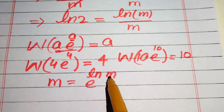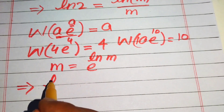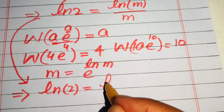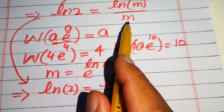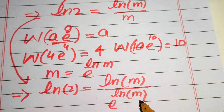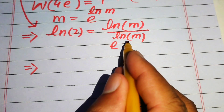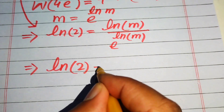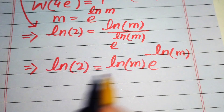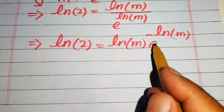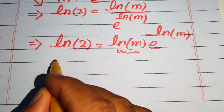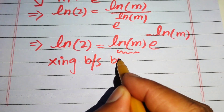We replace m with e to the power of log m, so the right-hand side log of m divided by m becomes log of m divided by e to the power of log m. Moving e to the power of log m to the numerator, it is written as log 2 equals log m times e to the power of negative log m.